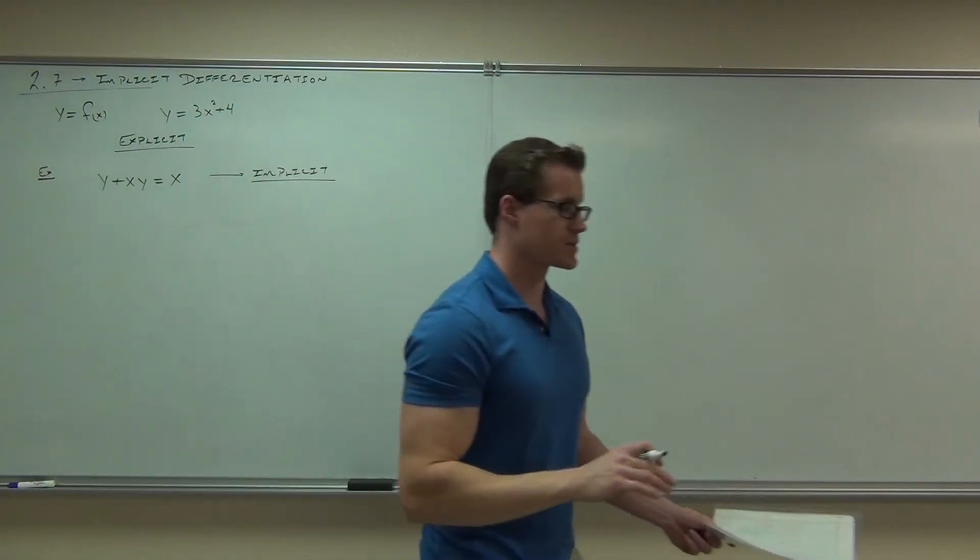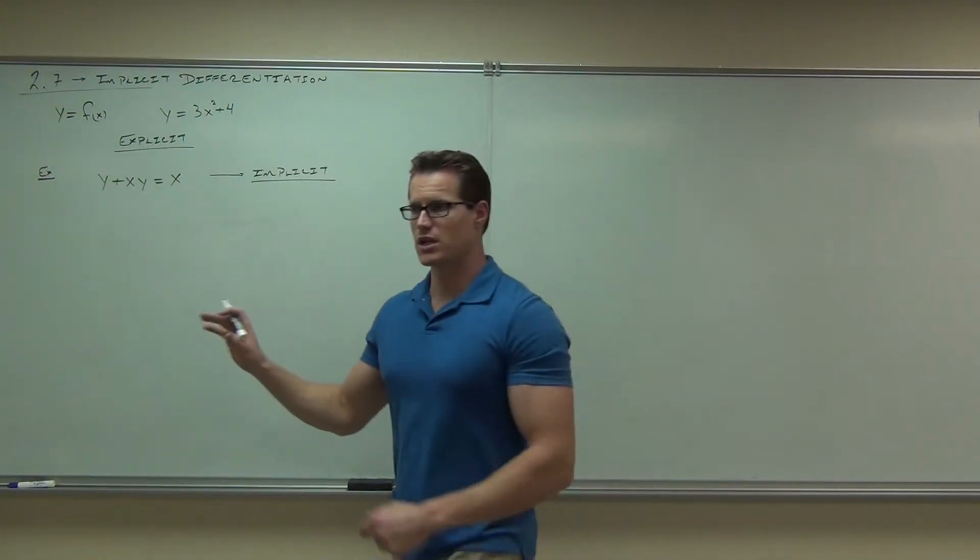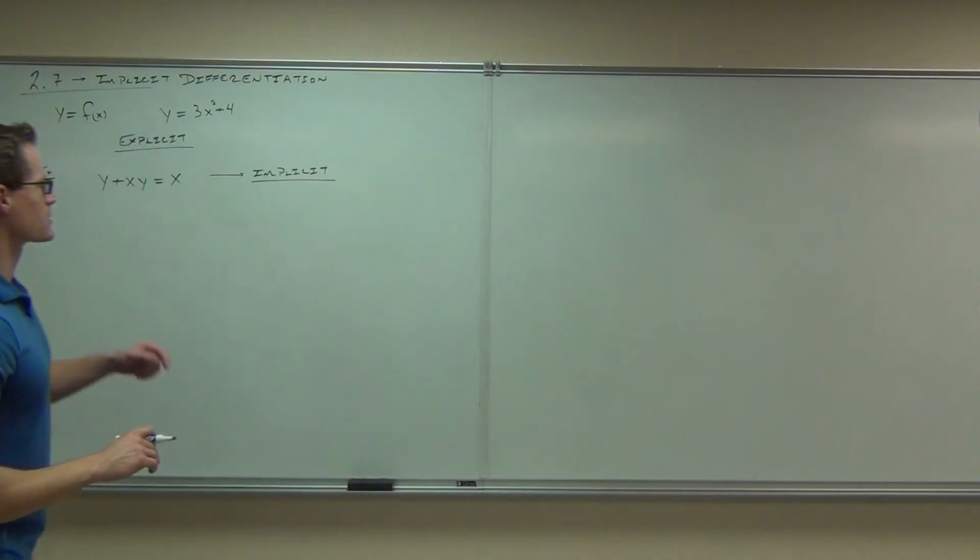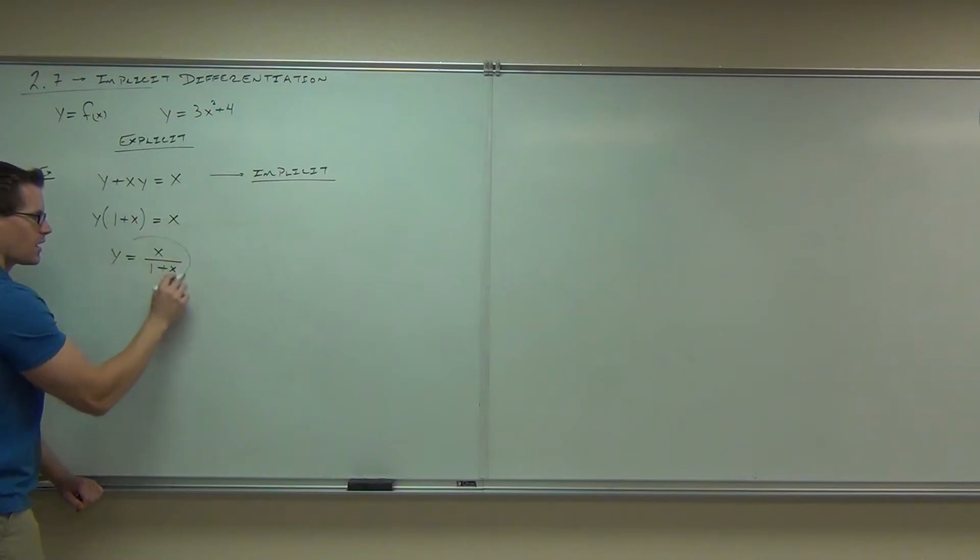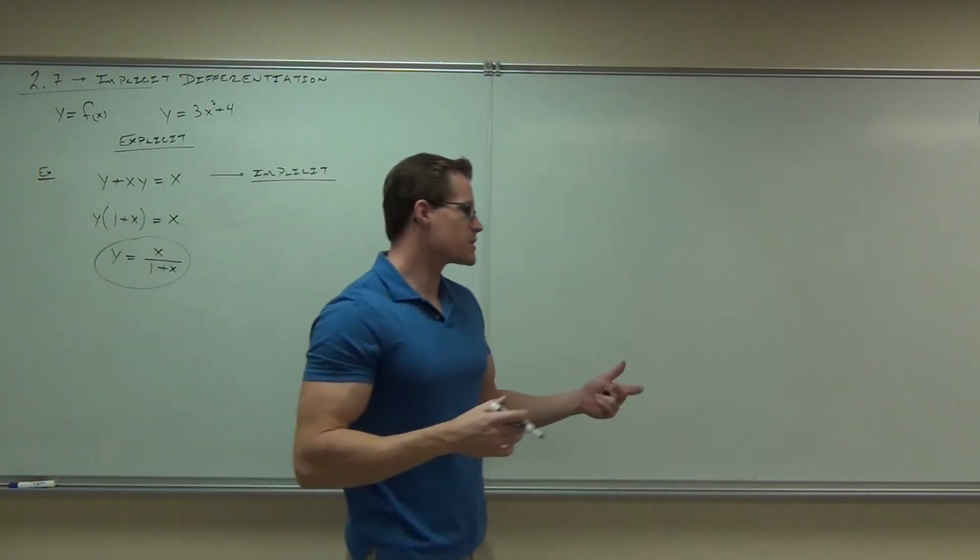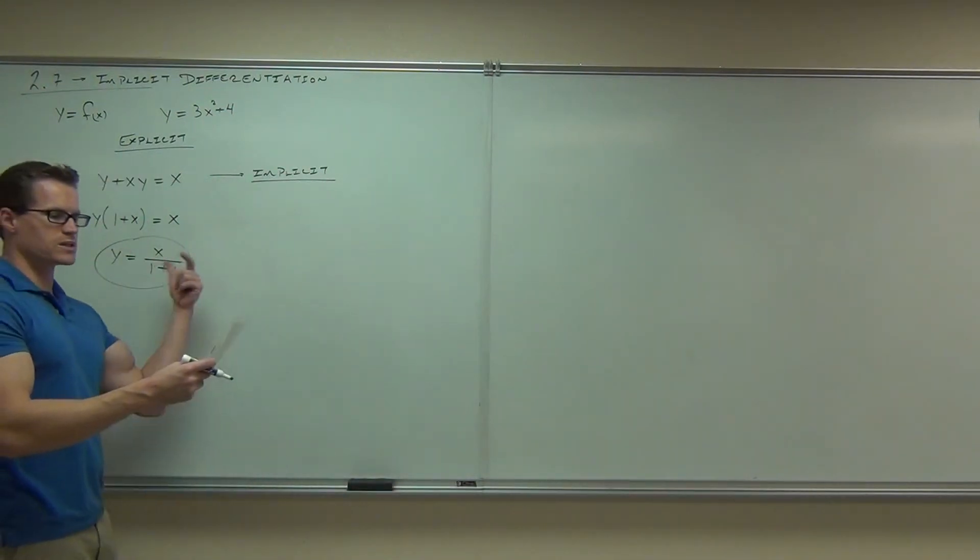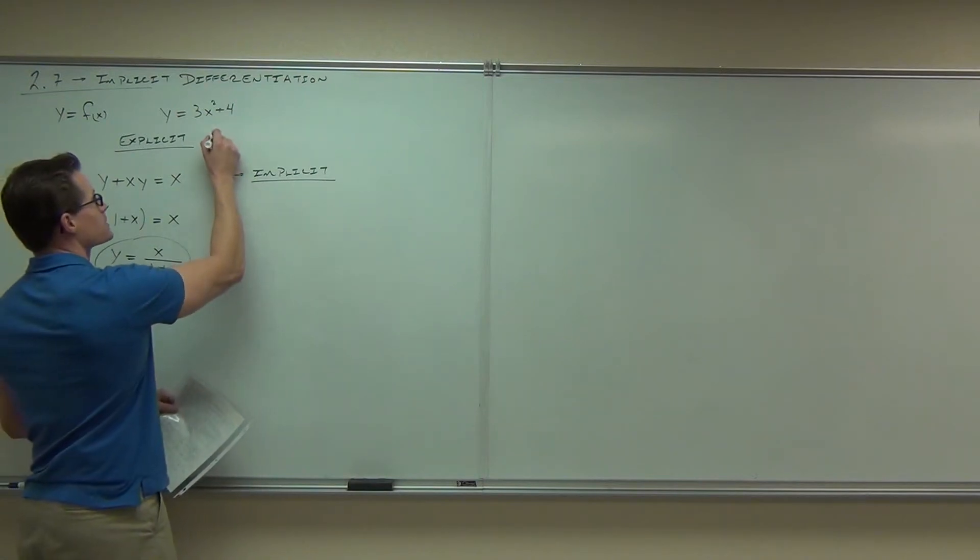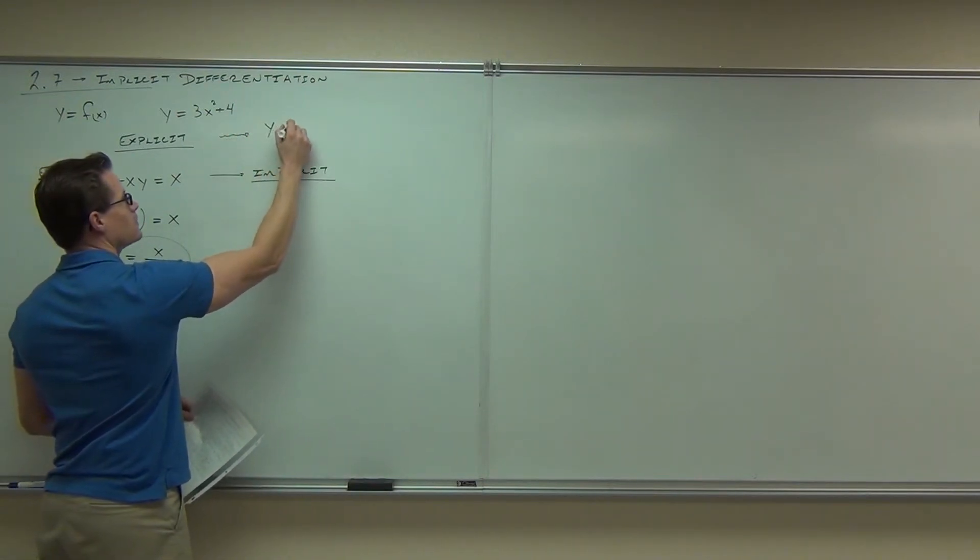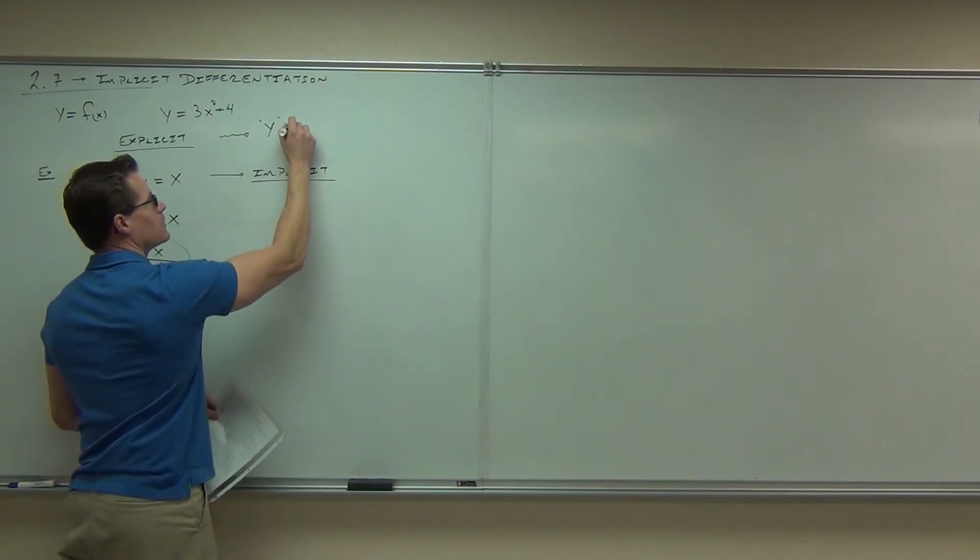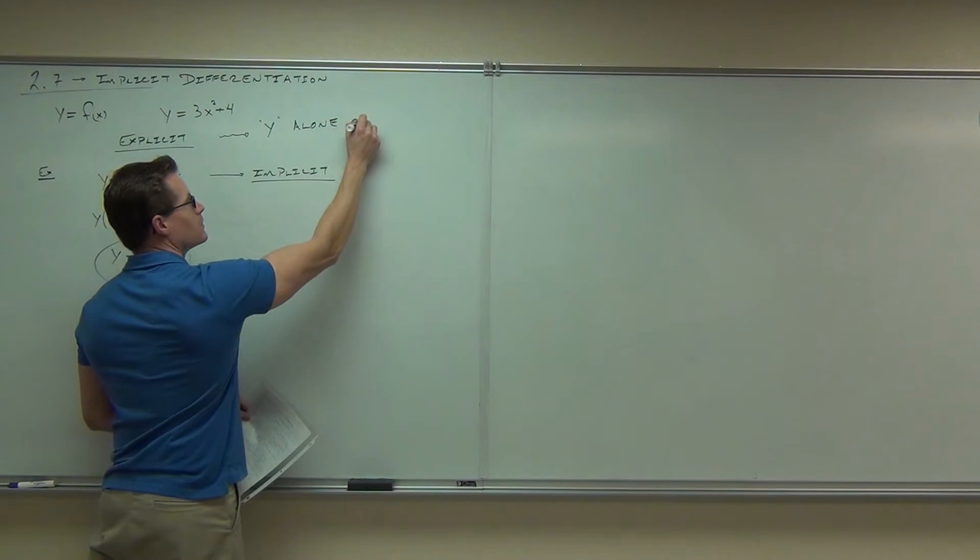Now, the interesting thing is some of the times we can make an implicit function into an explicit. Let me show you how in this example. Firstly, if we wanted to solve this for y, I would probably factor out the y. I get y times (1 plus x) equals x. And if I divide by 1 plus x, I get y equals x over (1 plus x), and that's now explicitly written. So sometimes I can change from implicit to explicit. So if the y is alone on one side, that means it's written explicitly.